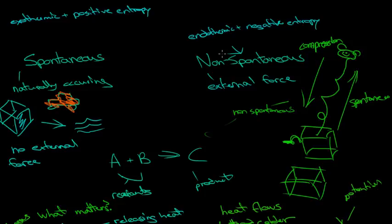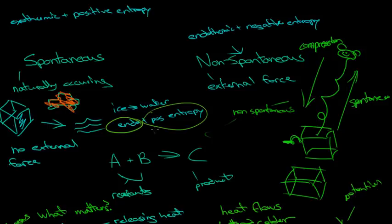Now sometimes you can have a mix. For instance, with the ice cube, ice to water is endo plus its positive entropy. And so we sort of need some sort of system of figuring out whether or not that reaction will be more endothermic, or whether the positive entropy will kind of override that to make the reaction continue and go forward.